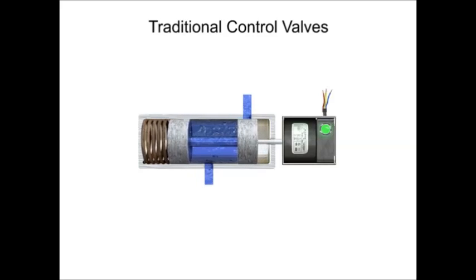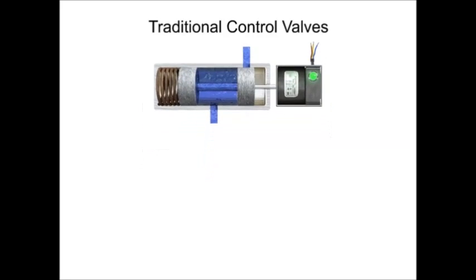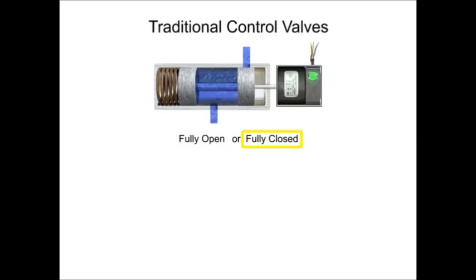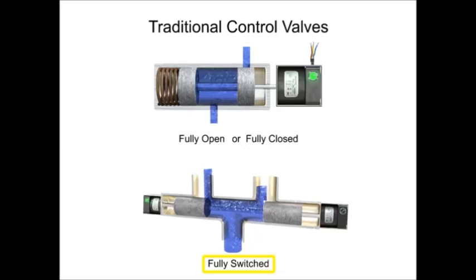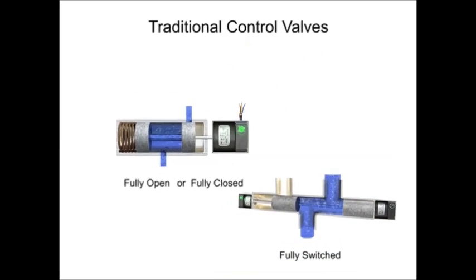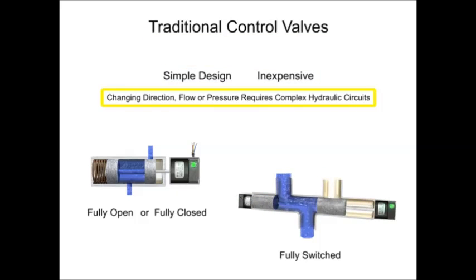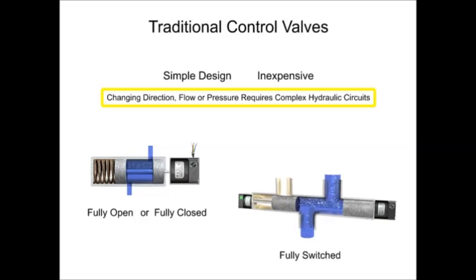Traditional control valves are the most basic type. The flow control of a traditional control valve is typically limited to fully open, fully closed, or fully switched to a new flow path. They are of simple design and capability. Changing direction, flow, or pressure during machine operation would require a complex hydraulic circuit, with each desired condition requiring an individual traditional valve to control it.